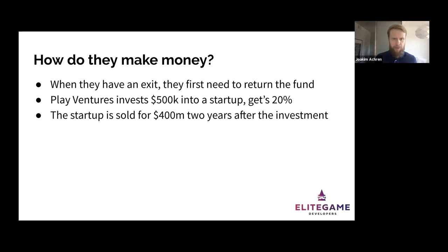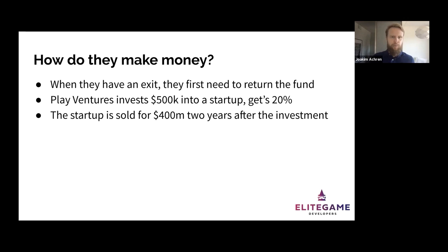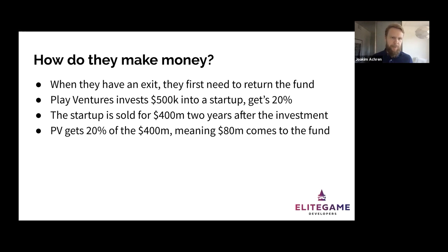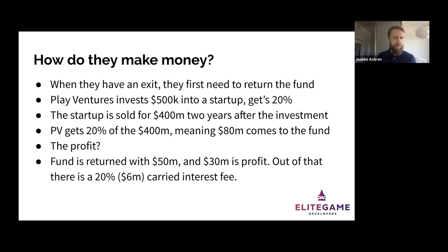Say that startup is sold for 400 million. Play Ventures owns 20%, so 80 million comes to the fund. Subtract the 50 million fund size, and there's 30 million in profit. Out of that profit, 20% — which is 6 million — is carried interest, which is what the general partners Harry and Henrik would receive. That's the profit mechanism: return the fund first, then take 20% of the remaining profit as carried interest.